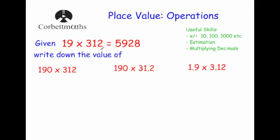Given that 19 times 312 is equal to 5,928, write down the value of the following. In the first one, our 19 has become 190 and our 312 has stayed the same. So that means it's become 10 times bigger — one of the numbers is 10 times bigger, which means our answer will become 10 times bigger. So our answer will be 59,280.